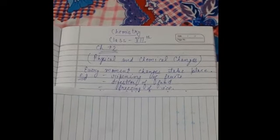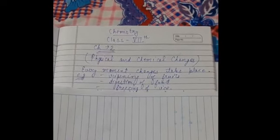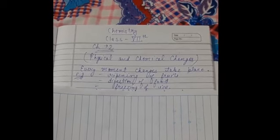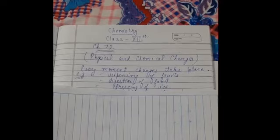Today we will start with our chapter number 2, that is physical and chemical changes. Every moment changes take place, for example ripening of fruits, digestion of food, freezing of ice.